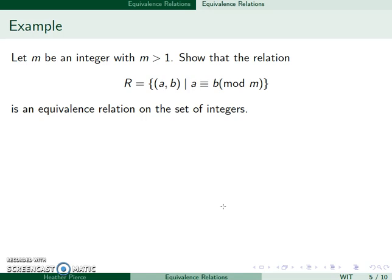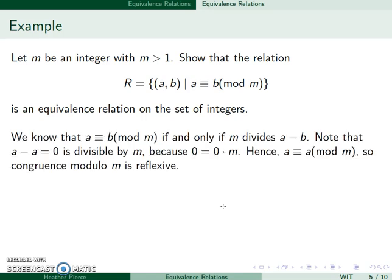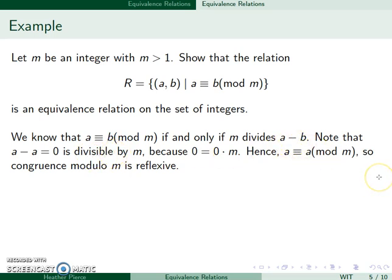Now let's look at modular arithmetic. A is equal to B mod M if and only if M divides A minus B — this is the original definition of modular arithmetic. Since A minus A equals zero, which is divisible by anything, A is equivalent to A mod M, so the relation is reflexive.